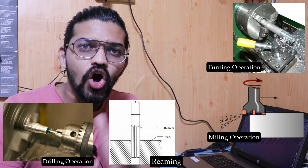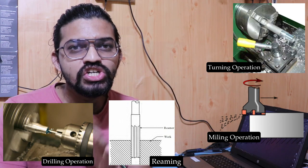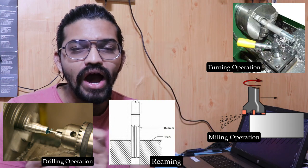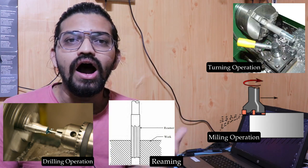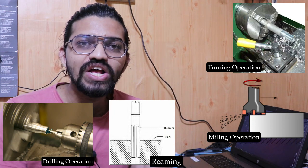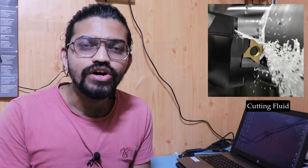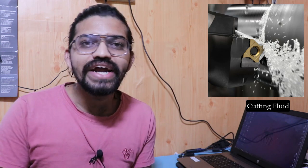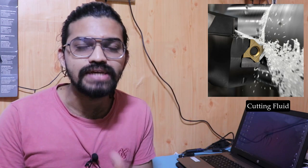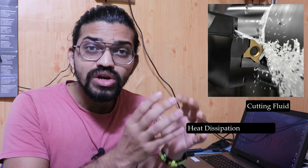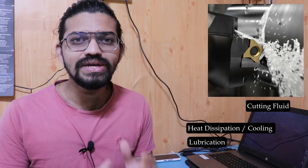In any kind of machining operation — whether it is turning, milling, drilling, or reaming — we always require machine tools, a workpiece, a cutting tool, and a cutting fluid. This cutting fluid is used for a variety of operations and is a necessity of the process, always required for heat dissipation, cooling, and lubrication.